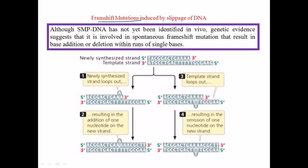Here we have a template strand from 5 prime to 3 prime and a newly synthesized strand. When we have stretches of G and A, one of the A's gets slipped out during production of the new strand. This slipping can happen due to a fault during the DNA replication process — problems with the arrangement of beta clamps and polymerization techniques — causing part of the sequence to slip out.